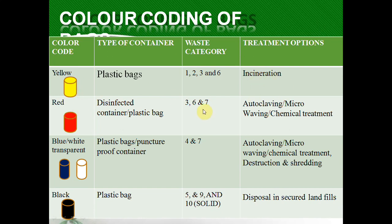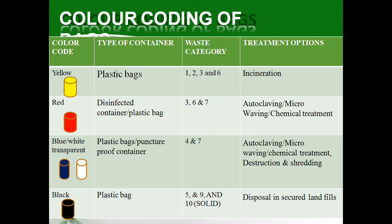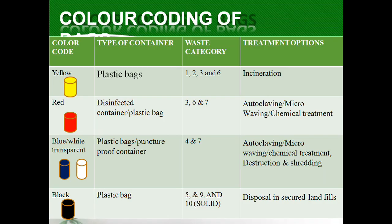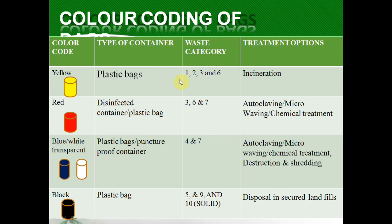To summarize color coding: categories 1, 2, 3, and 6 go to yellow bags and are treated by incineration. Categories 3, 6, and 7 go to the red bag — note the overlap between yellow and red. Categories 4 and 7 go to blue/white puncture-proof containers, treated by autoclaving or shredding. Yellow goes to incineration, red goes to autoclaving and shredding, blue/white is for sharps with autoclaving and shredding, and categories 9 and 10 in black go to landfills.